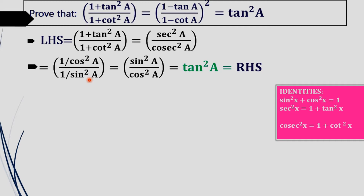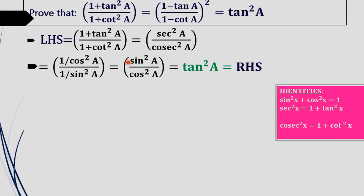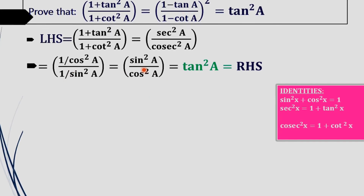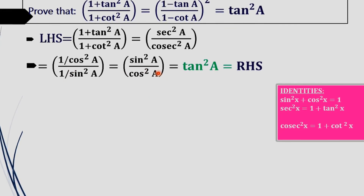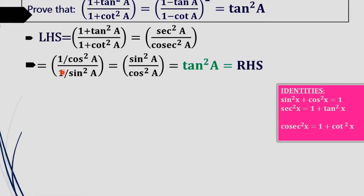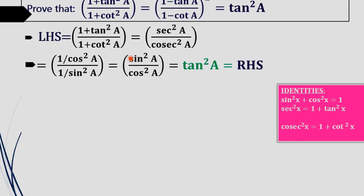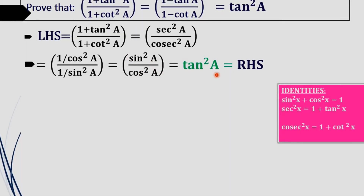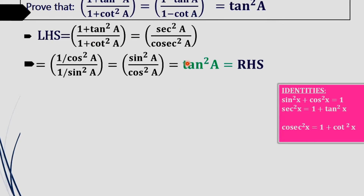Now, sec²a equals 1/cos²a and cosec²a equals 1/sin²a. So we have (1/cos²a) / (1/sin²a). Using the result 1 / (1/a) = a, sin²a moves to the numerator and cos²a to the denominator, giving sin²a / cos²a, which equals tan²a — our RHS.